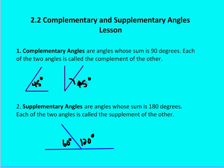Now the angles don't have to be congruent in order to be complementary. I can have an angle whose measure is 89 degrees and an angle whose measure is 1 degree — those two angles are complementary angles.